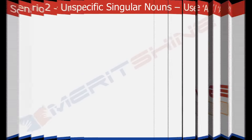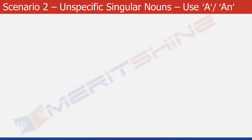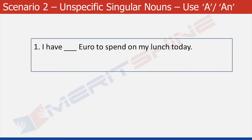Now let us move to scenario 2. Look at this sentence: I have dash euro to spend on my lunch today. What do you think will come here — A or AN? Did you say AN? It's incorrect. The correct article would be A.